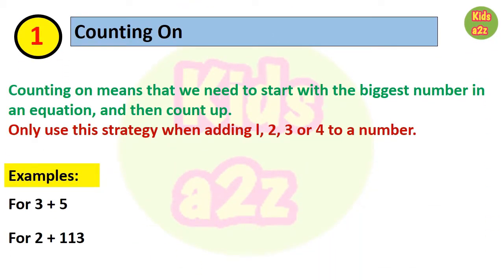Our first strategy is counting on. This is a beginning mental math strategy. Counting on means that we need to start with the biggest number in an equation and then count up. But one thing we need to keep in mind is that we can only use this strategy when adding 1, 2, 3, or 4 to a number.